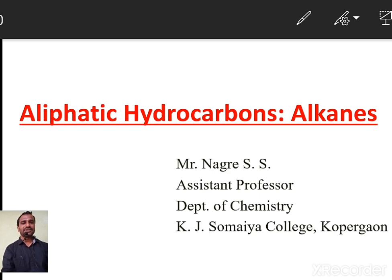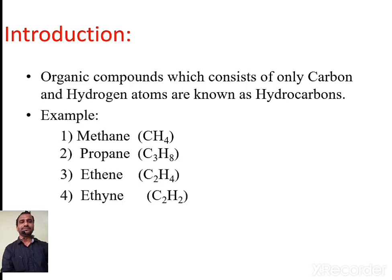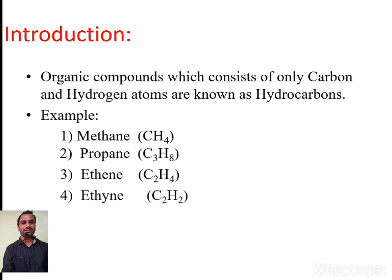The chapter is Aliphatic Hydrocarbons. In these Aliphatic Hydrocarbons, we have to discuss what are aliphatic hydrocarbons, and especially we are going to see what are alkanes. So first of all, what are hydrocarbons? Those organic compounds which consist of only carbon and hydrogen atoms are known as hydrocarbons.